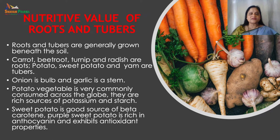Nutritive value of roots and tubers: Roots and tubers are generally grown beneath the soil. Carrot, beetroot, turnip and radish are roots. Potato, sweet potato and yam are tubers. Onion is a bulb and garlic is a stem. Potato is very commonly consumed across the globe and is a rich source of potassium and starch. Potato has a high glycemic index. Sweet potato is a good source of beta carotene. Purple sweet potato is rich in anthocyanin and exhibits antioxidant properties.